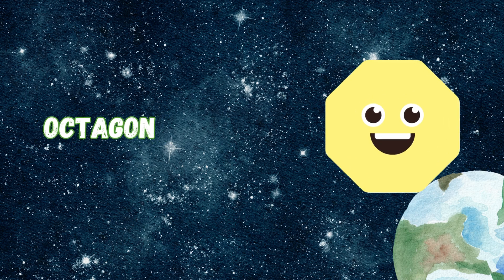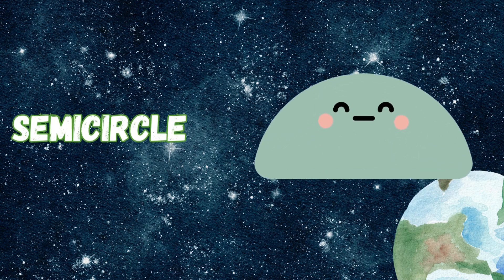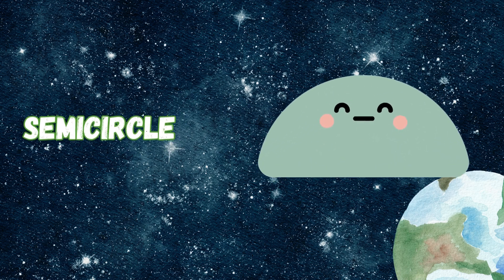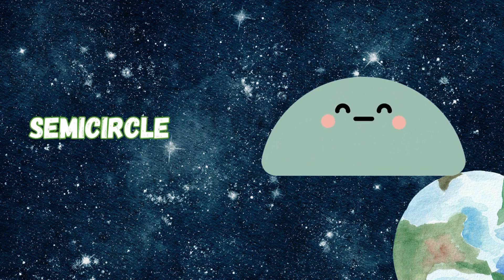Octagon has eight sides so strong. In stop signs, it's where you belong. Semicircle is half a round. It's like the moon, just half is found.